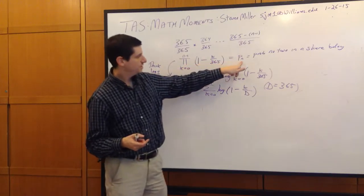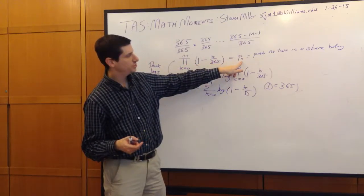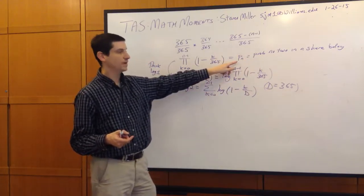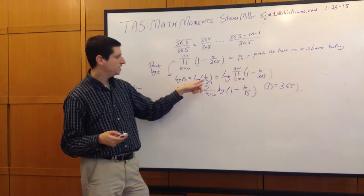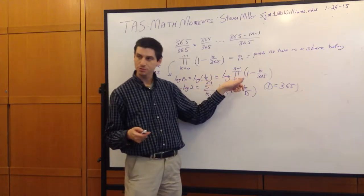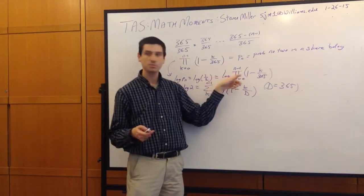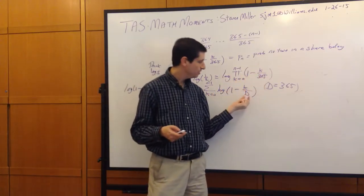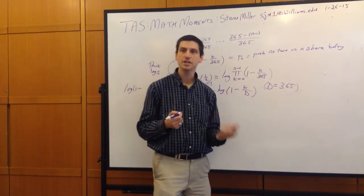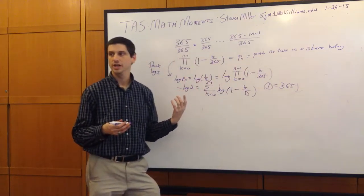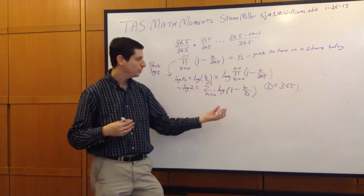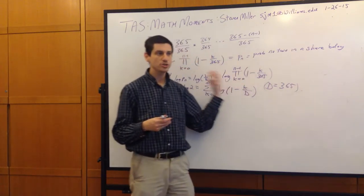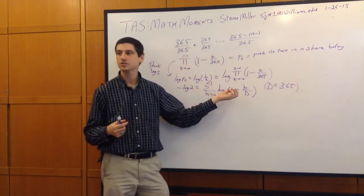We want the probability that no two people in n share a birthday to be 50%, so we want to find n such that this equals one half. We'll write d for the number of days in the year so we can do this more generally — for instance, if d is around 90,000 for Pluto, we can easily substitute in. We can also ask students: how do you think the answer changes with d?